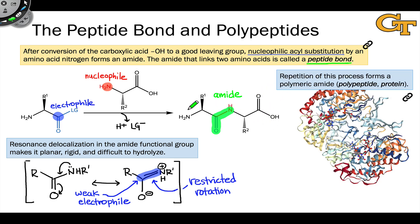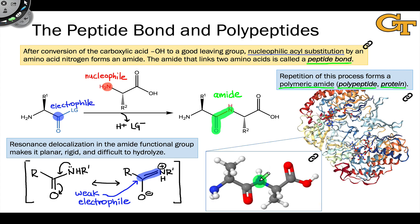Repeated action of this nucleophilic acyl substitution process forms a polyamide that's also known as a polypeptide or protein. The long stringy ribbon that you see is a representation of the polypeptide backbone. And if we zoom in on one piece of that backbone, we can see our amide buried in this structure, and we can also see side chains — in this case methyl groups — of two alanine residues projecting above and below the plane of the screen.